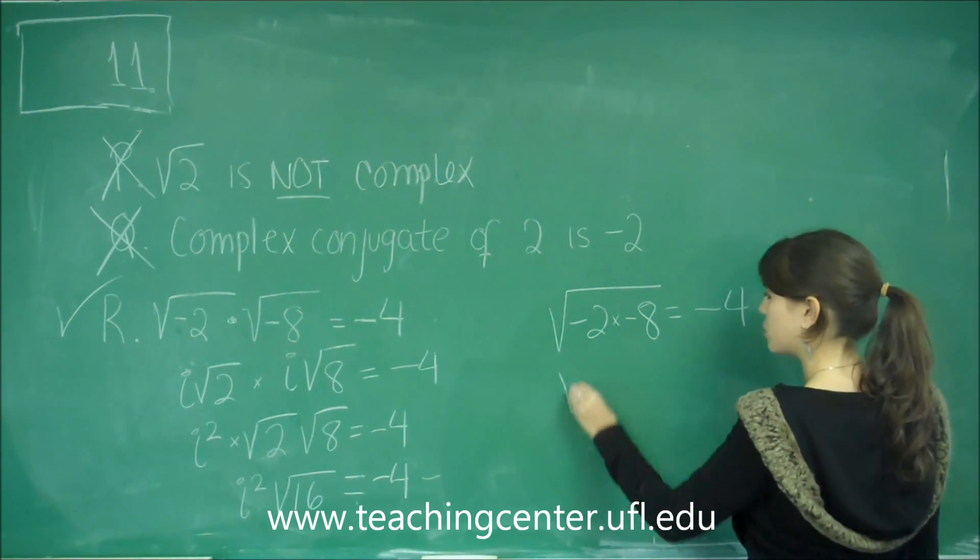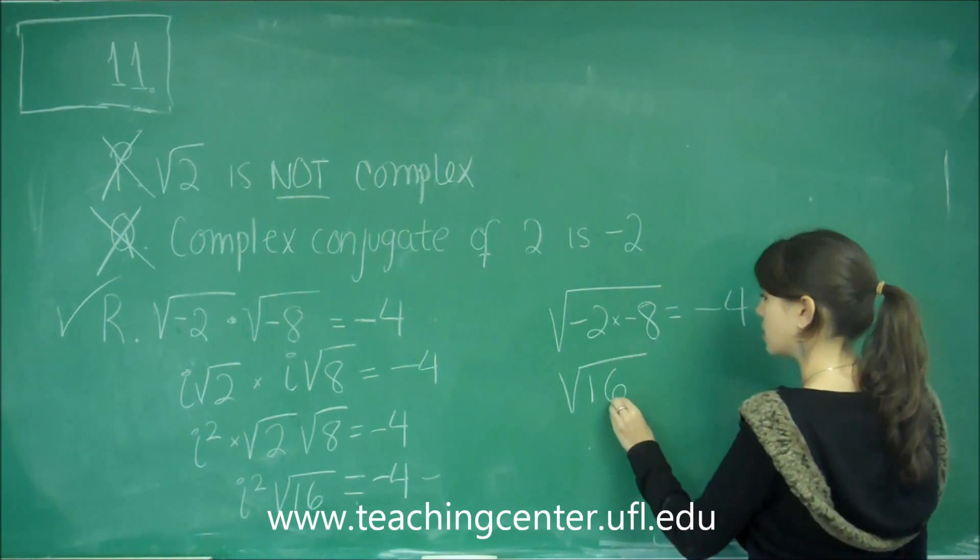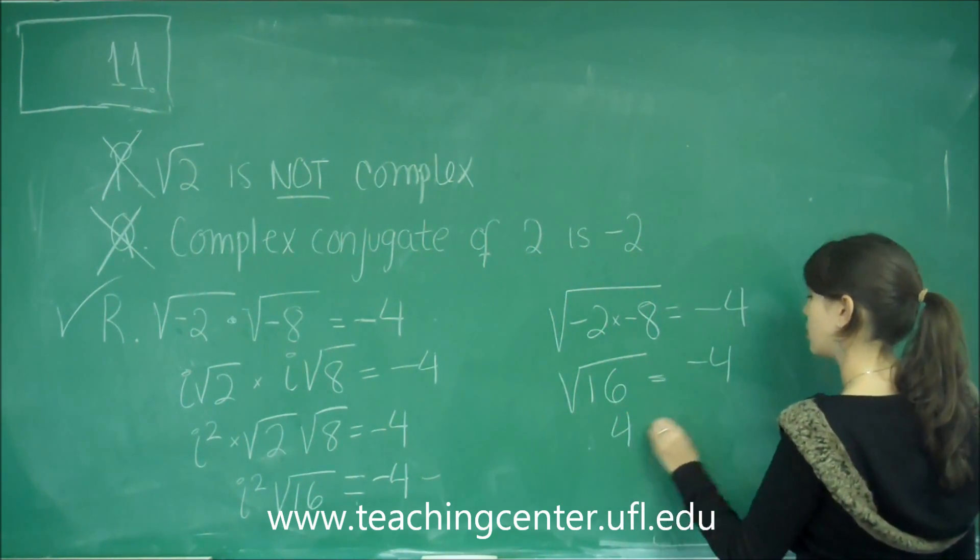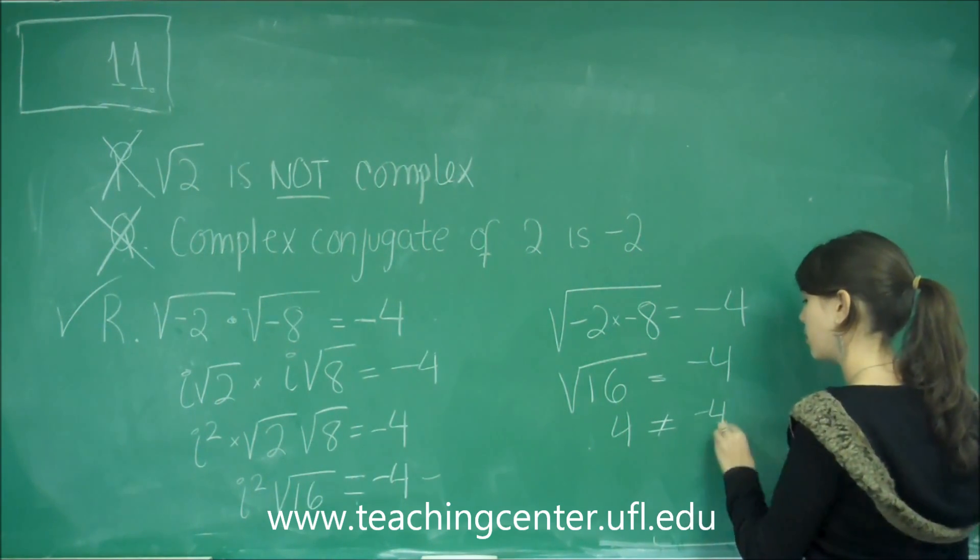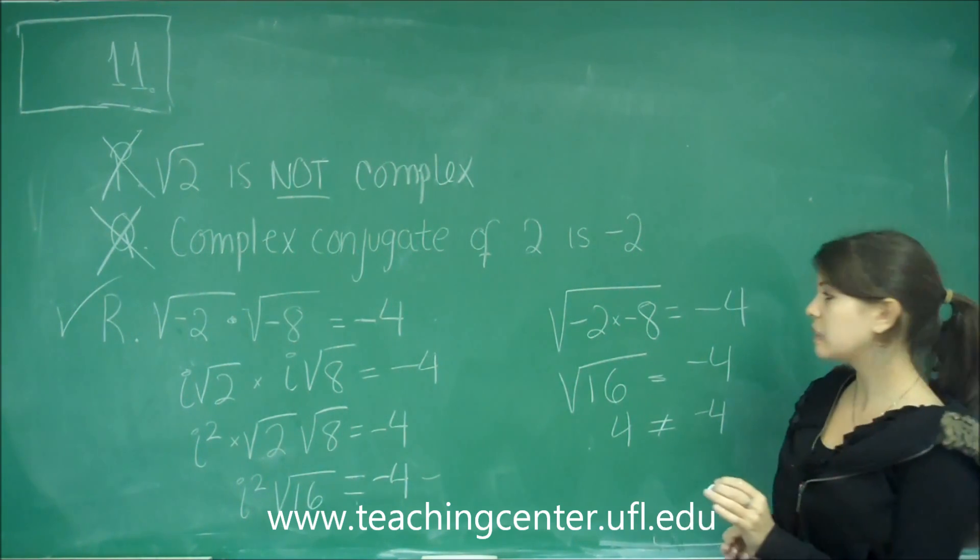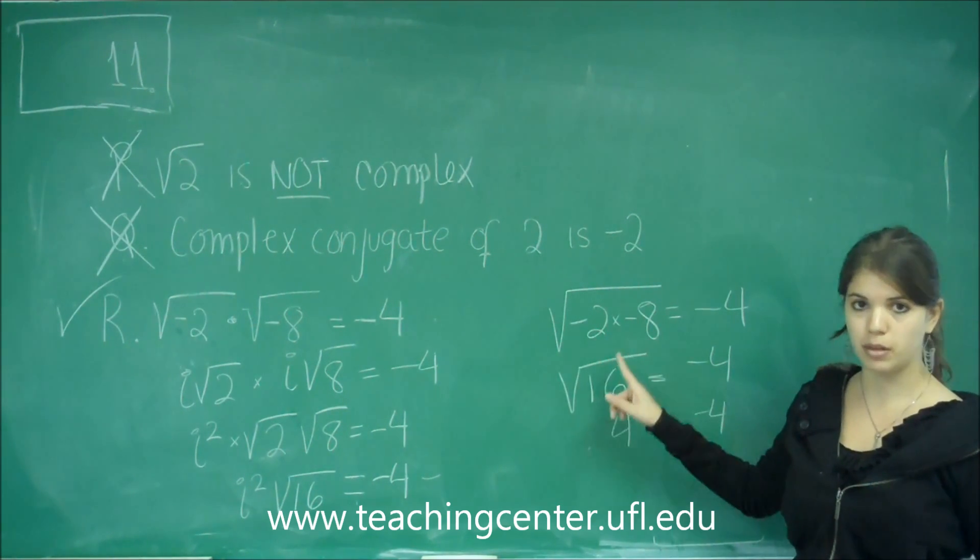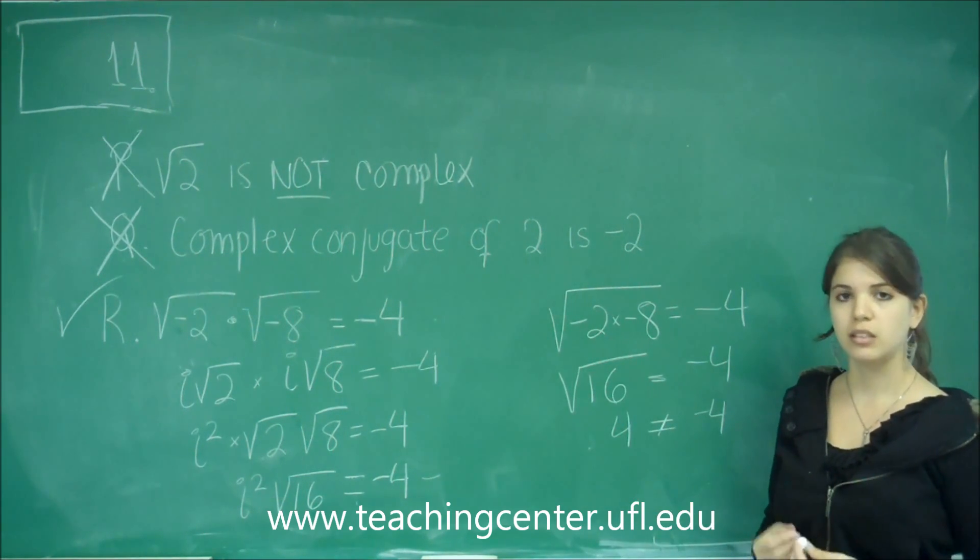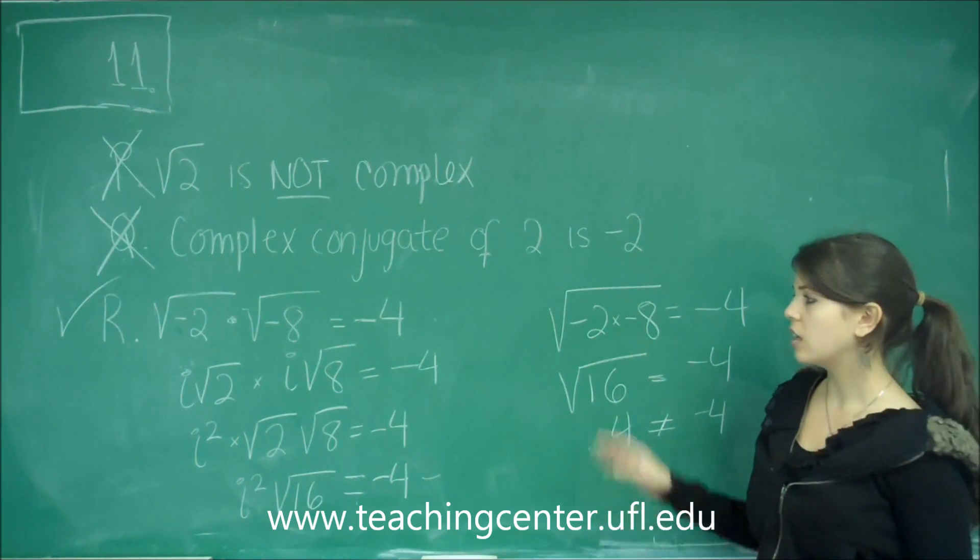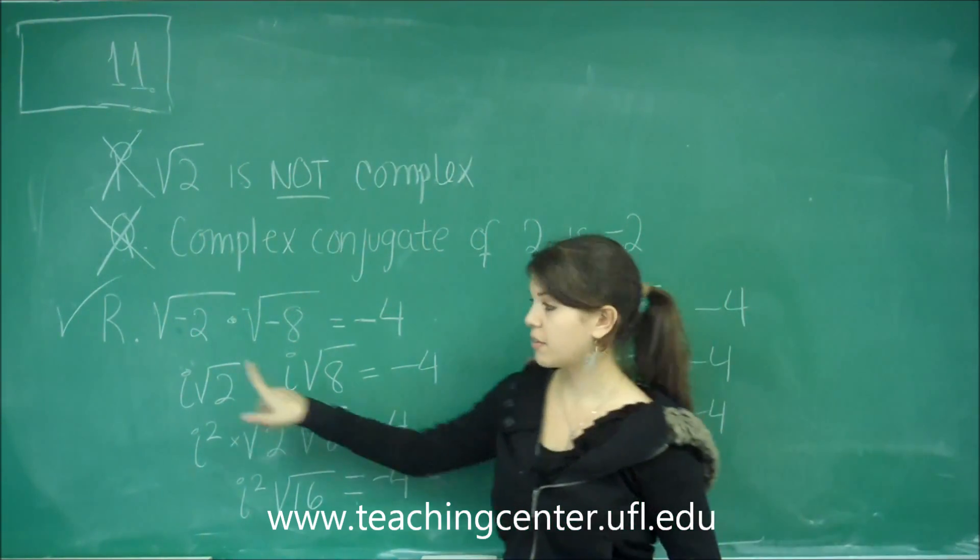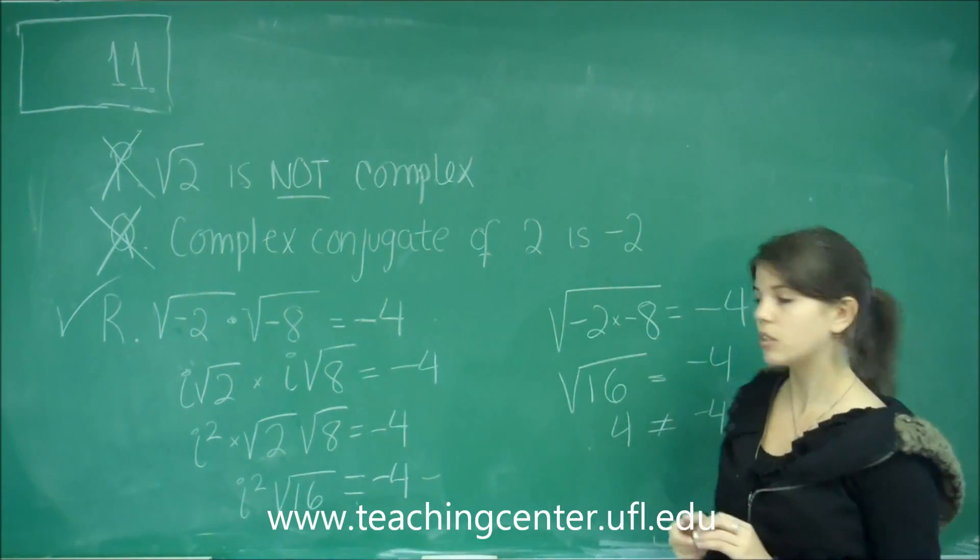And I would have gotten negative 2 times negative 8 is positive 16. And that gives me 4 does not equal negative 4. But the truth is that you can't eliminate two negatives under the square root by simple multiplication. And you have to use the definition of I whenever you see a negative under the square root. Every time you do that, go ahead and take out the I's first before you do anything else.